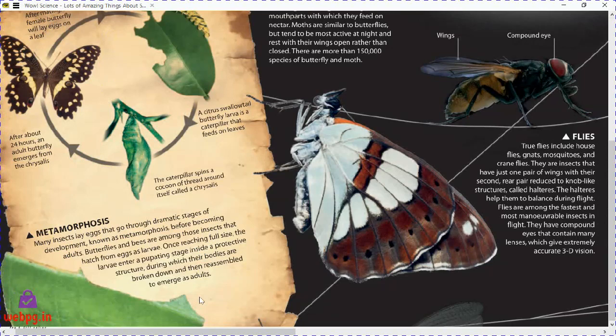This process is called metamorphosis. Many insects lay eggs that go through dramatic stages of development. It's fascinating to see in time-lapse videos how an egg transforms into a full butterfly. Butterflies and bees are among those insects that hatch from eggs as larvae, and once reaching full size the larvae enter a pupating stage — a protective structure during which their bodies are broken down and reassembled to emerge as adults.